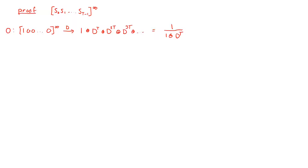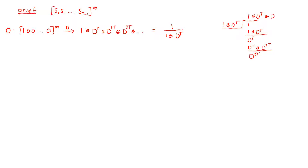We can see why we can write it this way by just performing this division and seeing what happens. So we have 1 over 1 plus d to the t. Doing this division: 1 goes into 1 once, and 1 times (1 plus d to the t) gives 1 plus d to the t, leaving d to the t as the remainder. Then 1 goes into d to the t, giving d to the t times (1 plus d to the t), which is d to the t plus d to the 2t. And then d to the 2t times 1 plus d to the t gives d to the 2t plus d to the 3t, and so on.